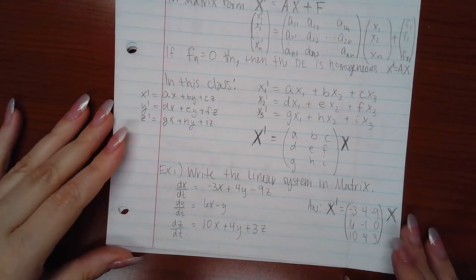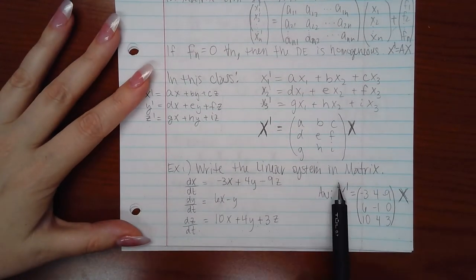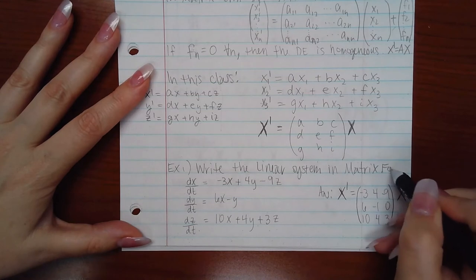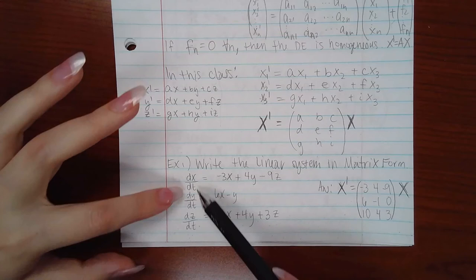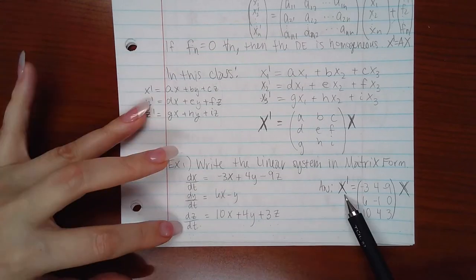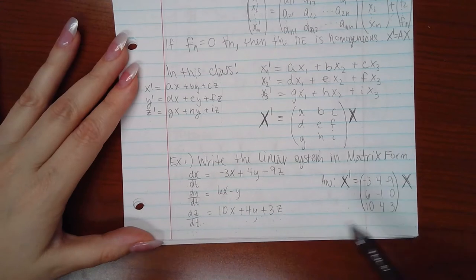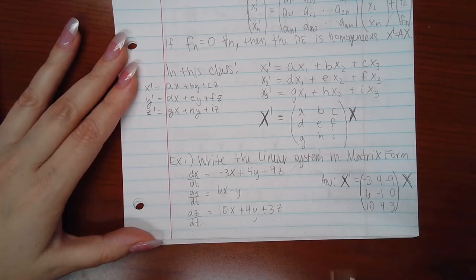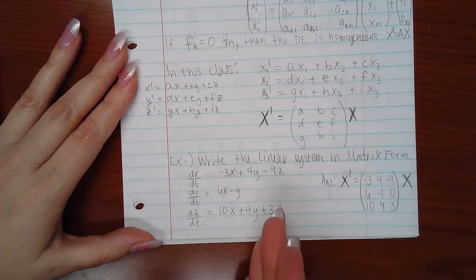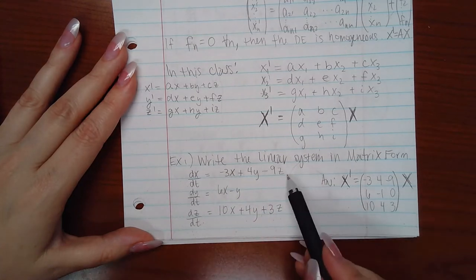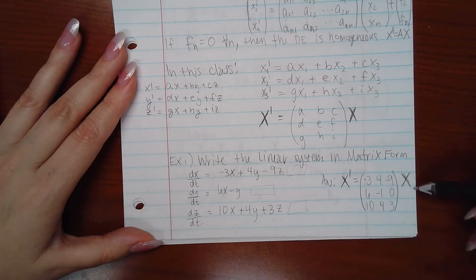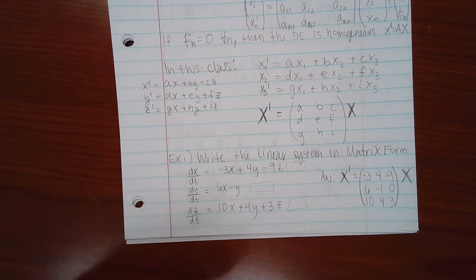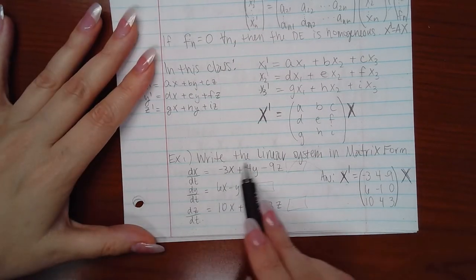And then we also want to use matrices to check answers or to verify solutions. So for the first example, we say write the linear system in matrix form. There is no other functions over here. It's just coefficients of X, coefficients of Y, coefficients of Z's. Nothing else extra here, nothing extra here, nothing extra here. So we won't have any other part, another vector or another matrix added to this.